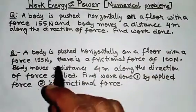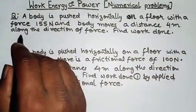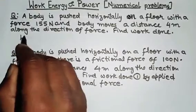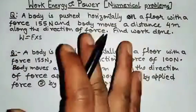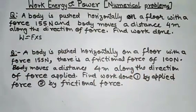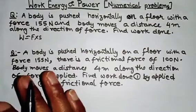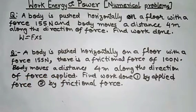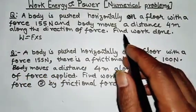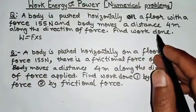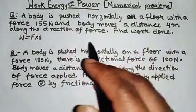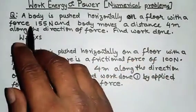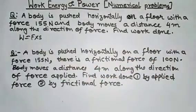So commonly what will you do? You will write the formula: work done W equal to force multiplied by displacement, put the values, and get the answer. But actually this question is incomplete — they must specify work done by what? By whom? Work done by the applied force?